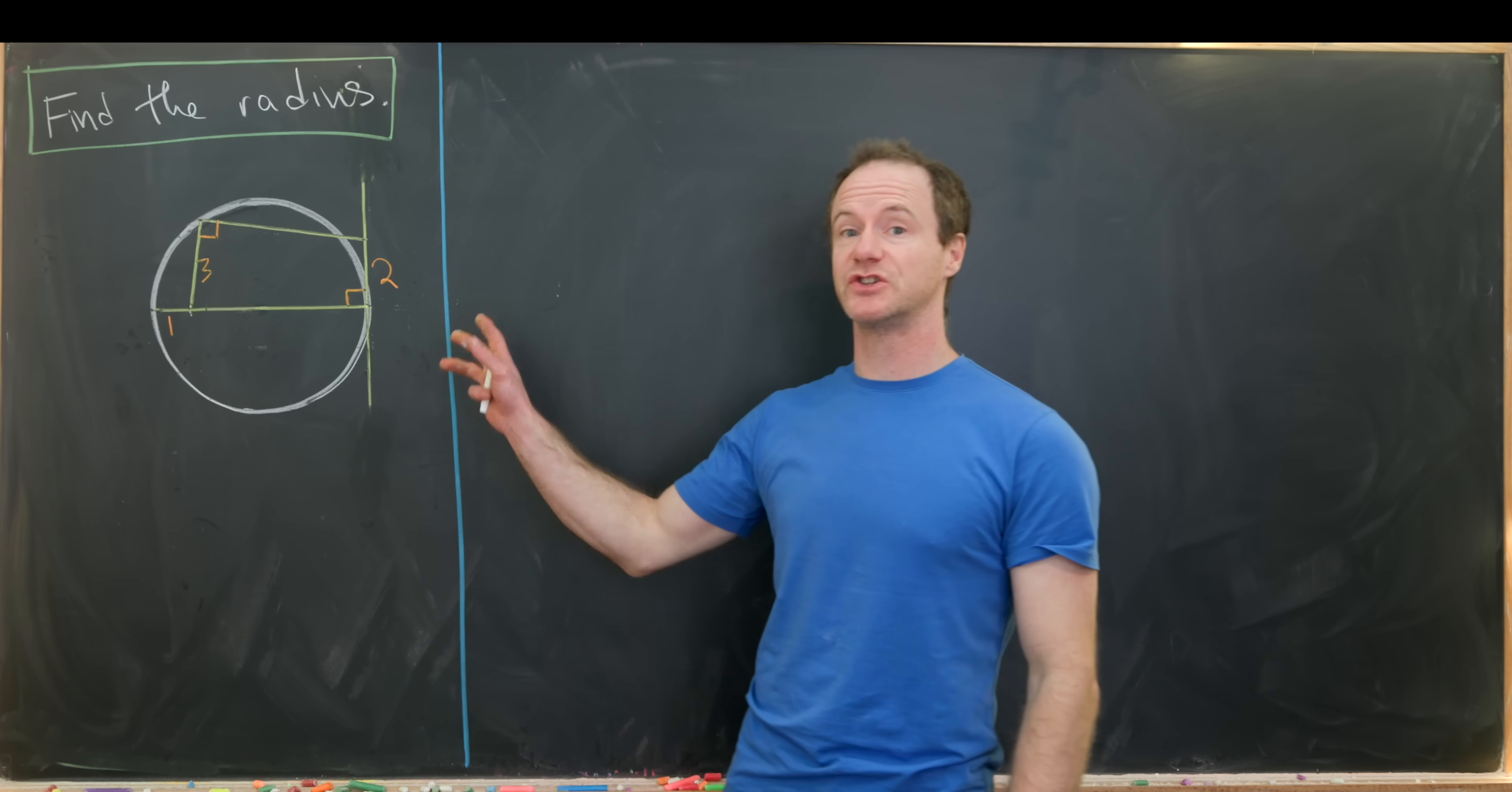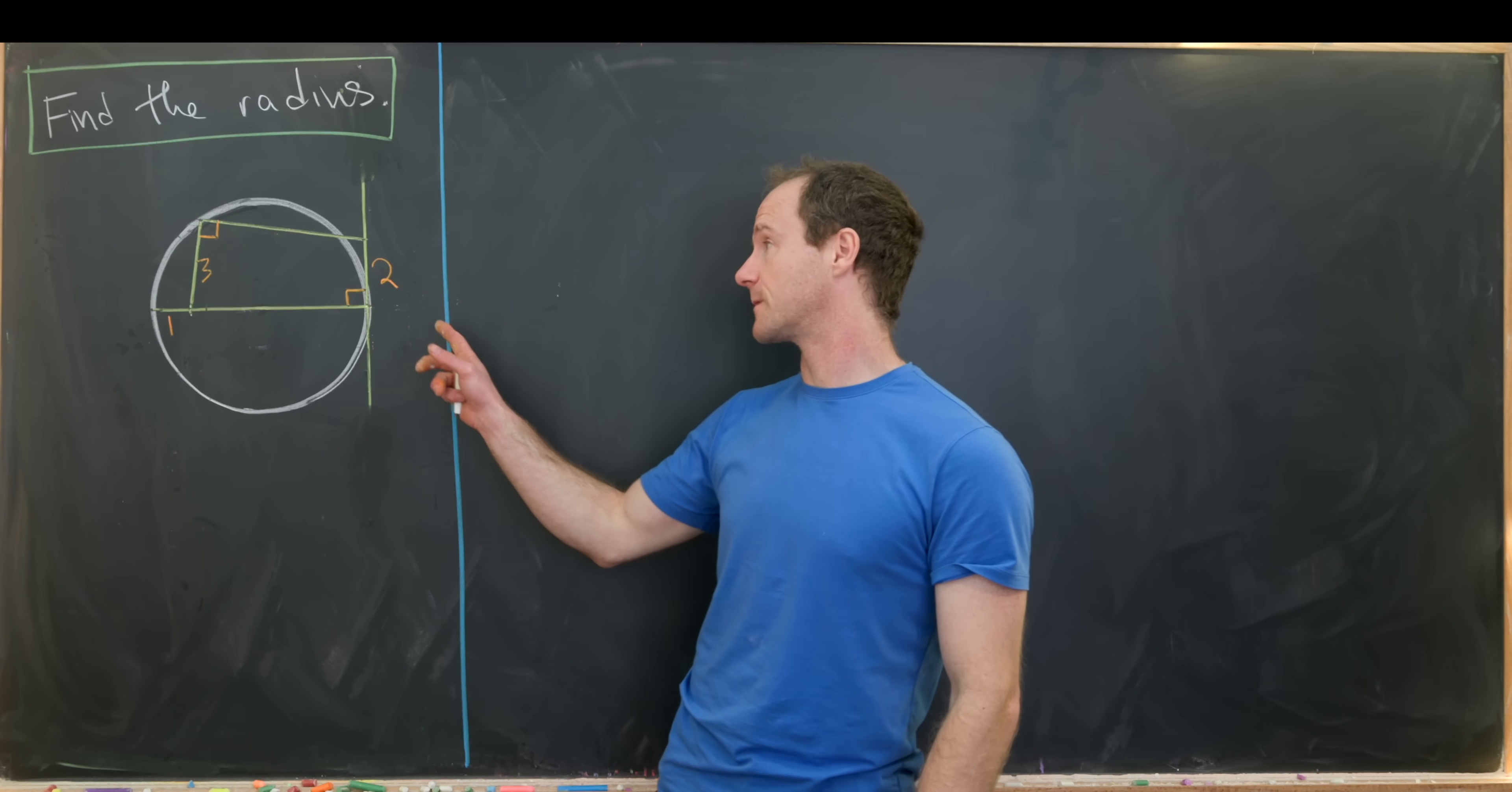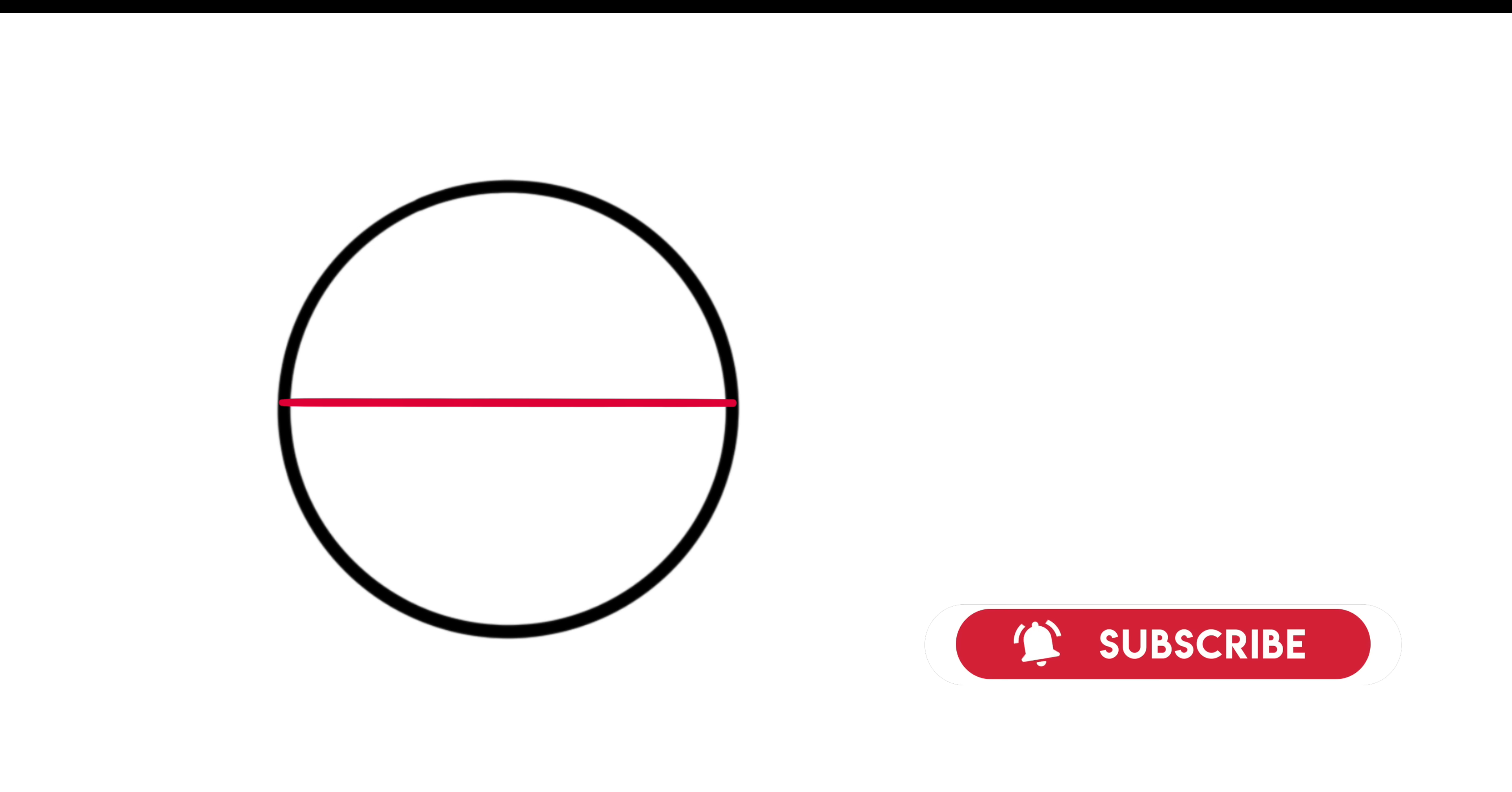Today we've got a nice geometry problem described by the following figure. Let's say we have a circle and then we draw a diameter on that circle and then a tangent to the circle where that diameter intersects the circle.